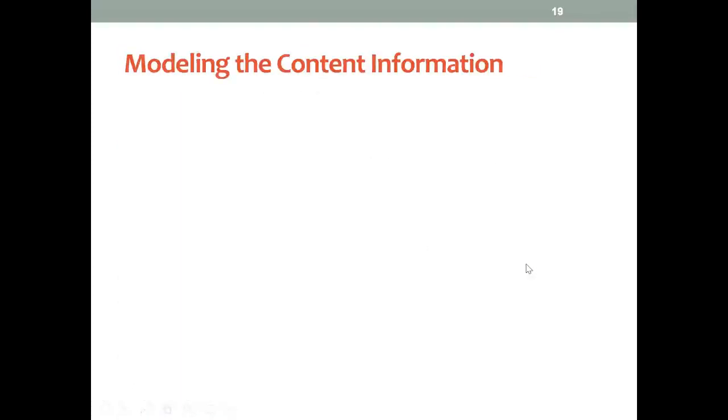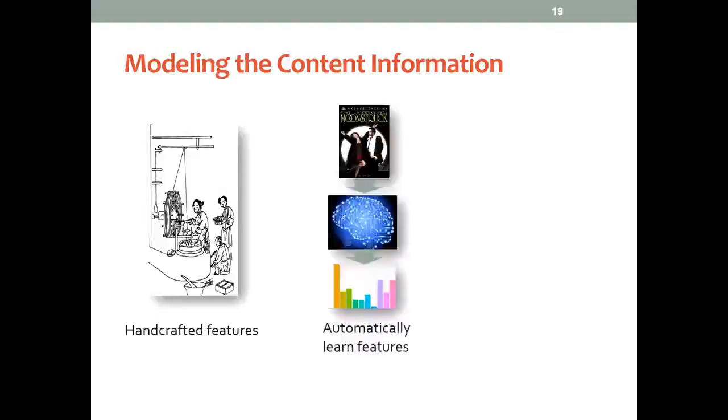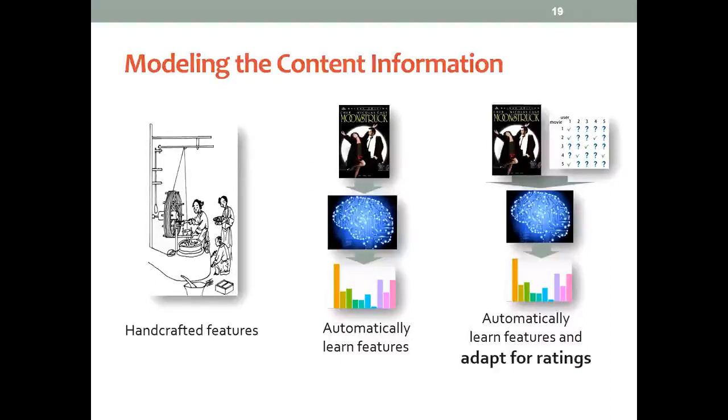Now, in order to model this content information and extract features, we have at least three options. We can manually craft the features, we can automatically learn the features using deep learning, or we can automatically learn the features using deep learning and adapt for the ratings at the same time. Naturally, the last option would be the best one.